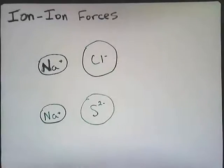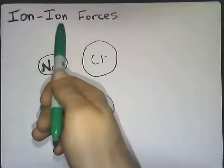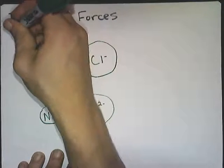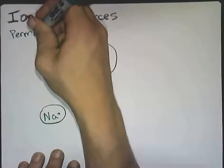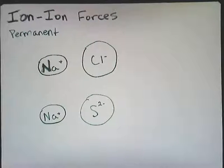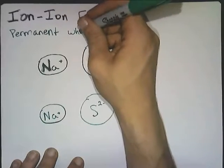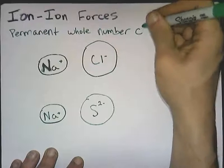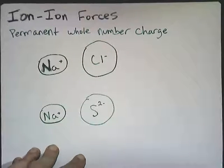So in this video, we're going to be looking specifically at ion-ion forces. So the force between two ions. Pretty straightforward. So ions have a permanent charge on them. Before we were looking at molecules which may have temporary charges or permanent dipoles, but ions have permanent charges and they're permanent whole number charges. So it's not a partial charge, it's a permanent whole number charge in this case, which is bigger than a partial charge.